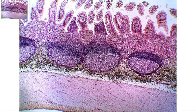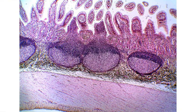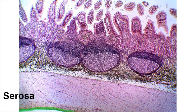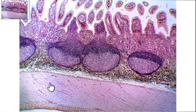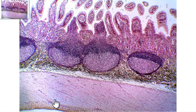You can see here this area right down at the very bottom — that is going to be the serosa, the outside layer or tunic. Then this area right here is going to be your muscularis externa.